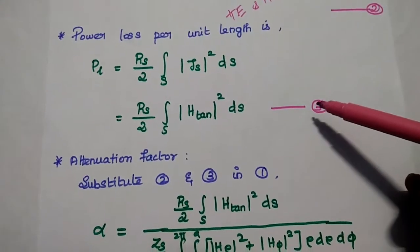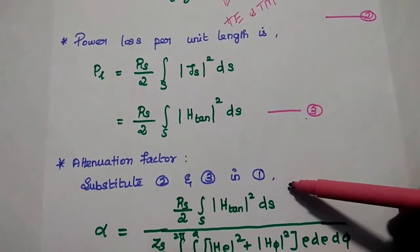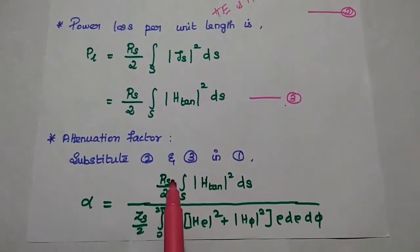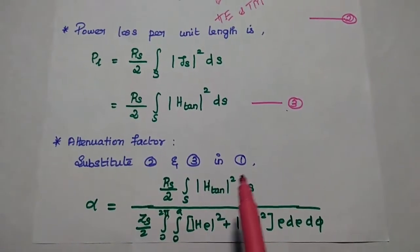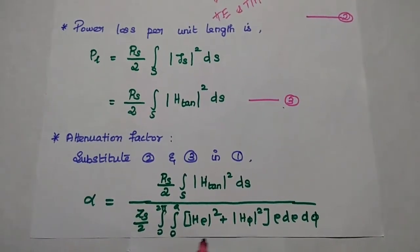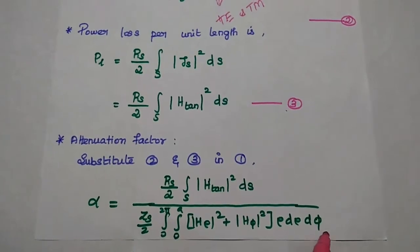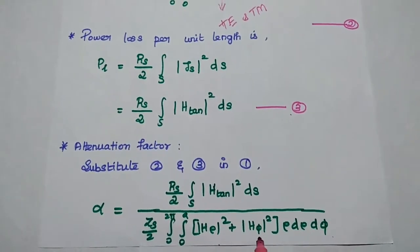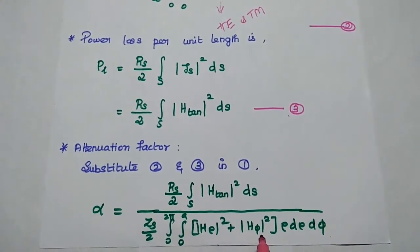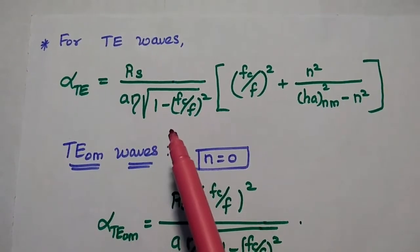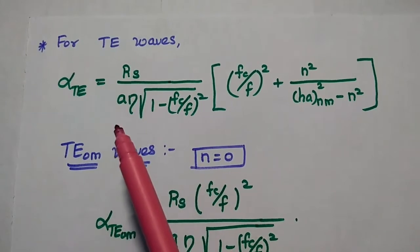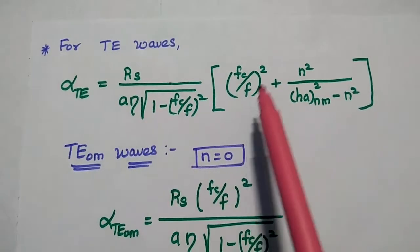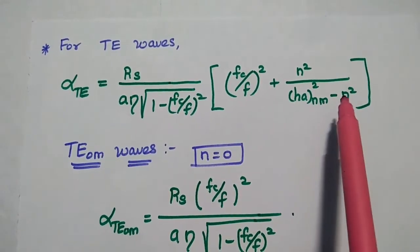Next, we are going to find out the attenuation factor by substituting the second and third equations into the first equation. So alpha equals the power loss per unit length — RS/2 times the surface integration of the tangential magnetic field squared dS — divided by ZS/2 times the double integration of (H_rho squared plus H_phi squared) rho d_rho d_phi. Substituting the H_rho and H_phi values for TE and TEM waves, we can get the attenuation factor. After substituting H_rho and H_phi values for TE waves, we get alpha_TE equals RS divided by (A times eta) times 1 over square root of (1 minus (fc/f)^2) times ((fc/f)^2 plus N squared divided by (H'_NM squared minus N squared)).